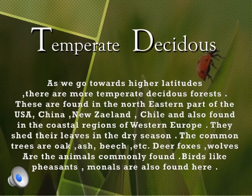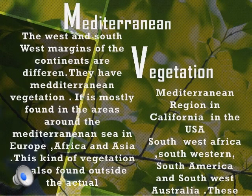Temperate deciduous forests are found in the cool temperate region, on the eastern and western margins of continents. The temperature here is moderate. These forests receive around 30 to 60 inches of rain every year and are ranked second only to rainforests as the rainiest biome. Winter temperatures are typically freezing. Animals found here include deer, fox, and wolves. Trees include oak, ash, and beech.